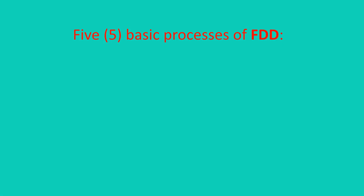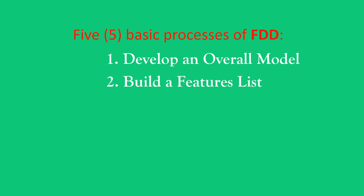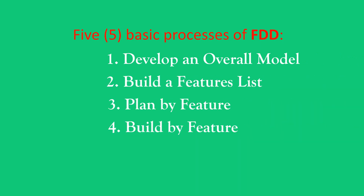FDD was designed to follow a five-step development process built around discrete feature projects. That cycle looks like this: develop an overall model, build a feature list, plan by feature, design by feature, and build by feature.